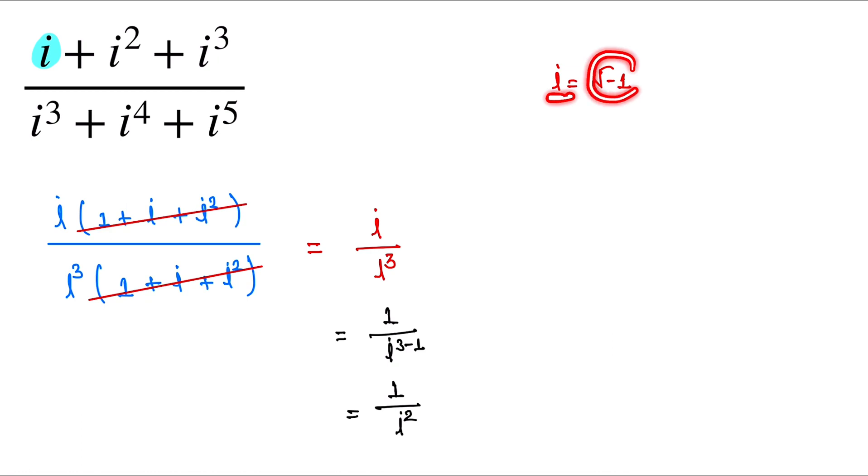Now the value of i is equal to square root of minus 1. So the value of i squared is equal to - we square both sides. Here is i squared is equal to minus 1.